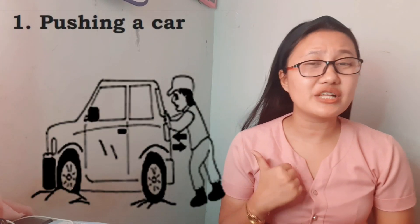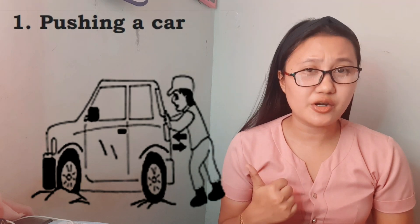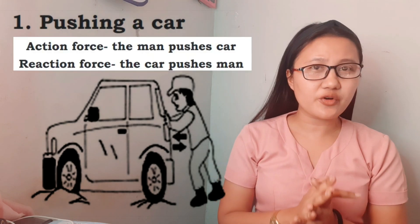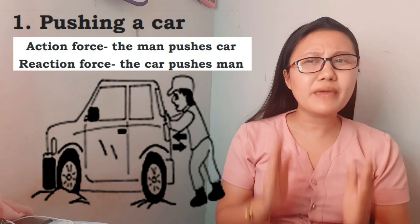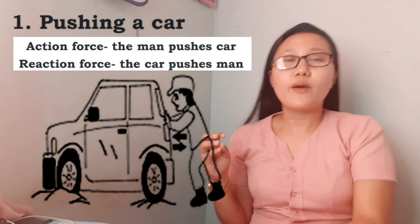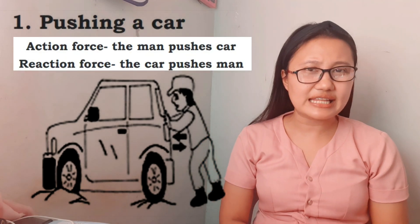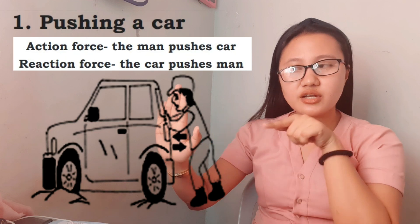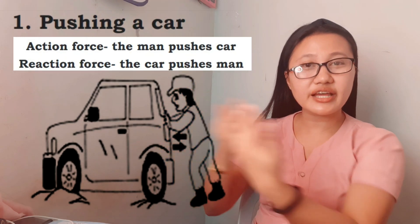I will give you examples of the law of motion where we can see the action force and reaction force. First example: a pushing car. As you can see, the arrows are pointing in opposite directions. The action force is the man pushes the car, while the reaction force is the car pushes the man back. A force is exerted on the car, while the reaction pushes us back in the same force but in the opposite direction.